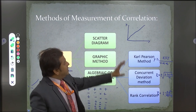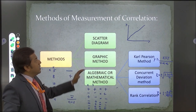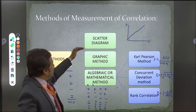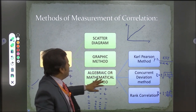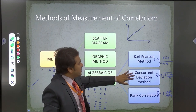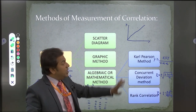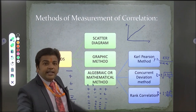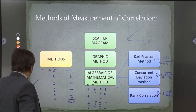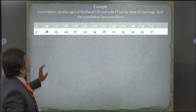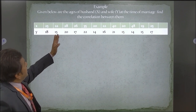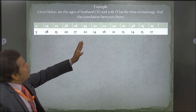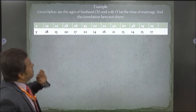To summarize: scatter diagram and graphic diagram are simple methods anyone can use. The three mathematical methods are Karl Pearson, concurrent deviation, and rank correlation. Let's take an example to understand in a better way.